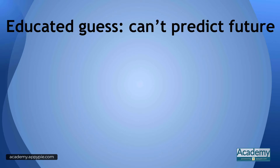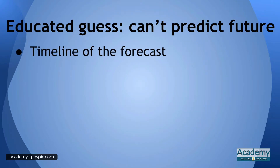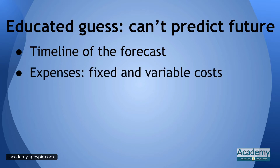You cannot predict the future, so this is at best an educated guess. You start off by having a timeline — sometimes a reasonable one, two, or three year timeline. The easy thing to do is to begin with counting up the costs.